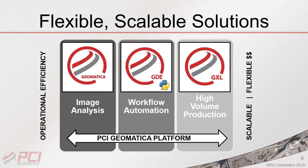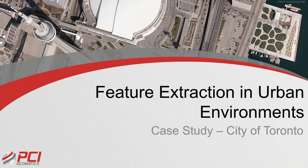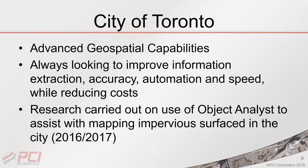Within Geomatica you can work with up to hundreds of images, and as you move toward thousands or tens of thousands of images you'd use one of our GXL production systems. We'd like to present the case study we put together with the City of Toronto on feature extraction in urban environments. Toronto has a very advanced geospatial capability and is always looking to improve information extraction, accuracy, automation, and speed to reduce costs when scaling up.